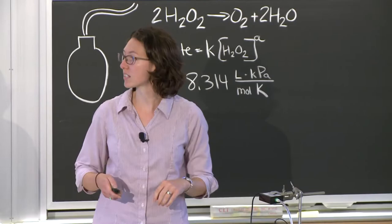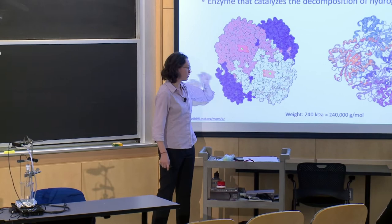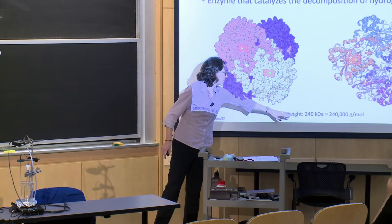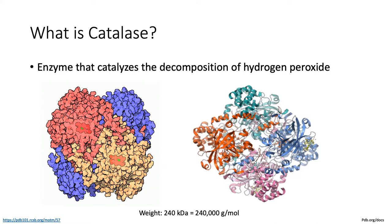Catalase is a large molecule. Proteins generally are — they are polypeptides with lots and lots of amino acids. Its molecular weight is 240 kilodaltons, and a kilodalton is 1,000 mass units, so it's 240,000 grams per mole. You'll need that for some calculations in the second half of the lab.